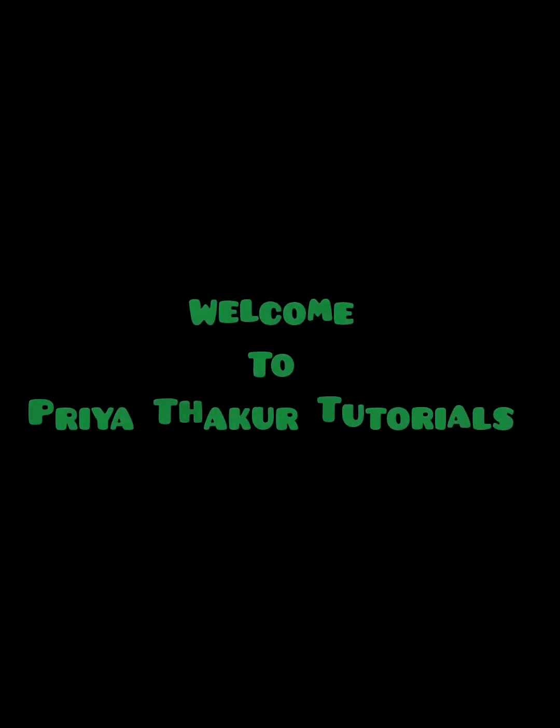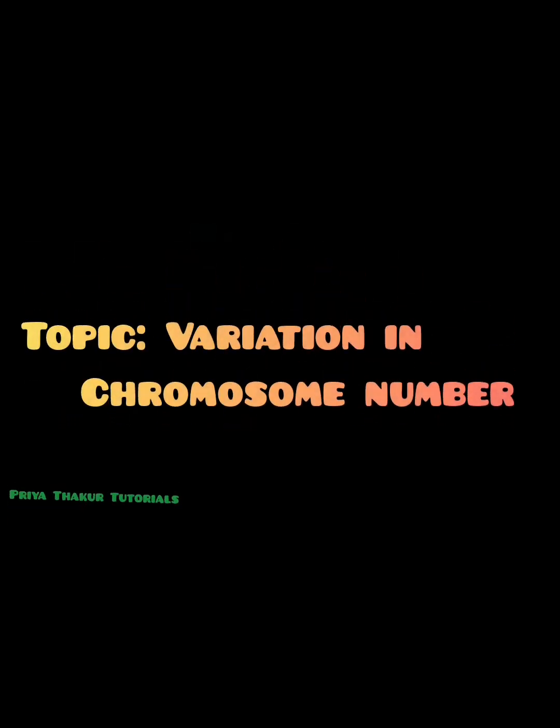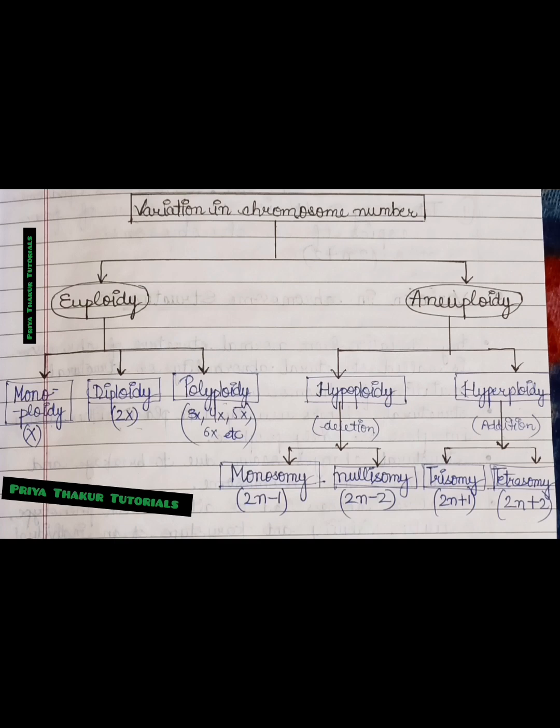Welcome to Priya Thako Tutorials. Today's video topic is variation in chromosome number. Variation in chromosome number is divided into two categories: euploidy and aneuploidy.